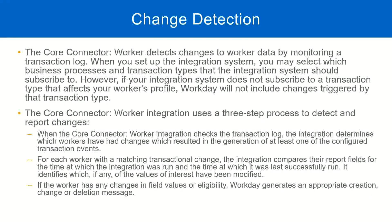The Code Connector worker integration uses a three-step process to detect and report changes. First, it looks at the transaction log and determines which workers have changes that it is monitoring. What kind of changes have happened to a worker? Are the changes related to what I'm looking for? For example, if the integration is only looking for hires or terminations, it checks whether this worker had any change in terms of hire or termination. It looks at the transaction log to find that out.